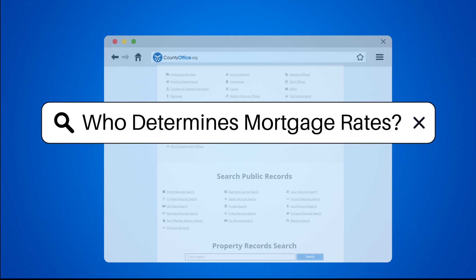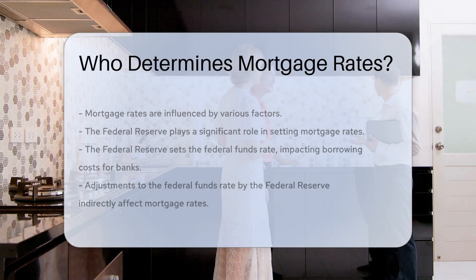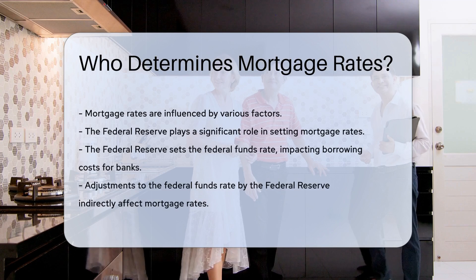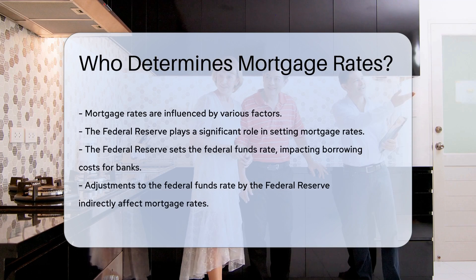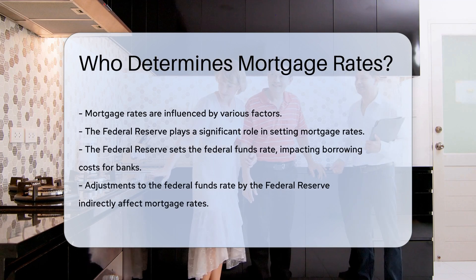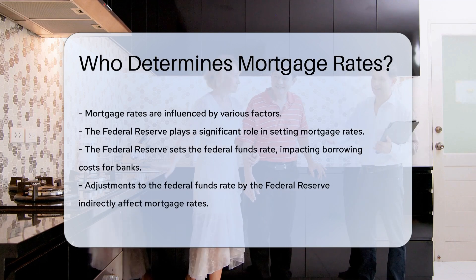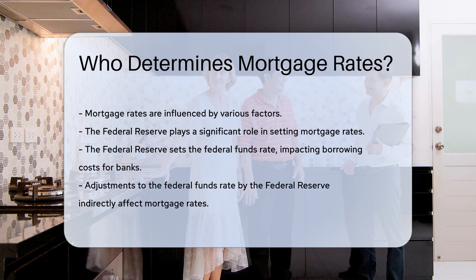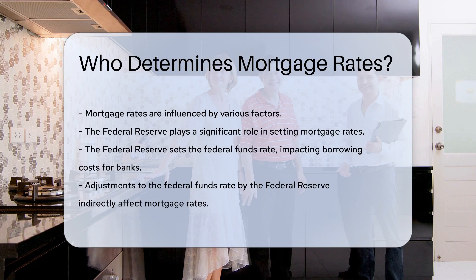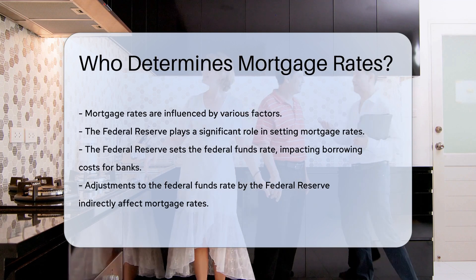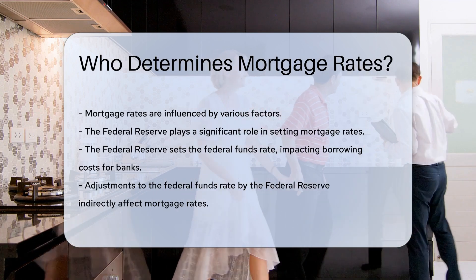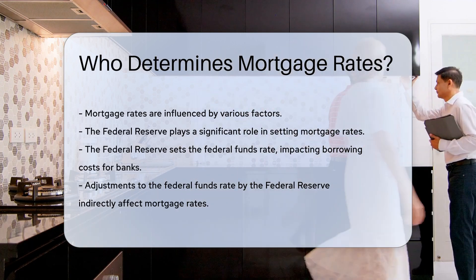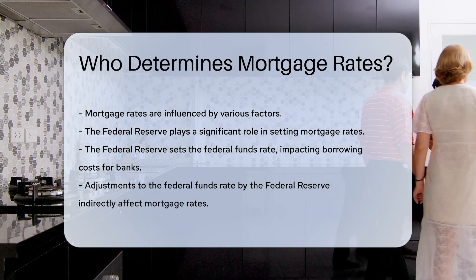Mortgage rates are influenced by various factors. The Federal Reserve plays a significant role. It sets the federal funds rate, which impacts borrowing costs for banks. When the Federal Reserve adjusts this rate, it indirectly affects mortgage rates.